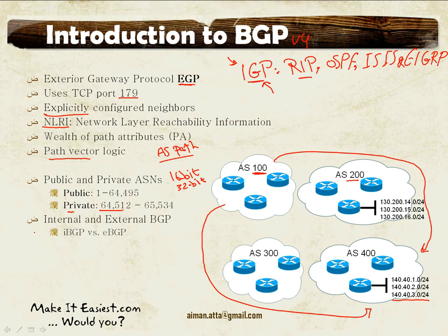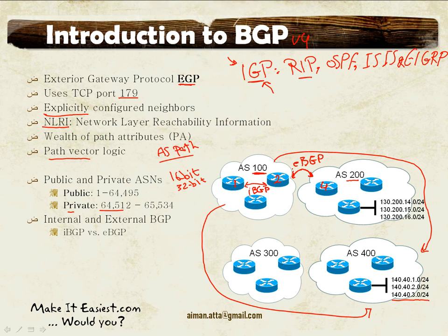We have different flavors of BGP — internal and external BGP implementations. If we use BGP between routers in the same autonomous system, such as Router1 and Router2 in autonomous system 100, this relationship is called IBGP, or internal BGP. But if we use BGP between Router2 and Router4, which belong to different autonomous systems, we use the flavor called external BGP, EBGP. There are differences between these two flavors, which we'll discuss in the upcoming session.